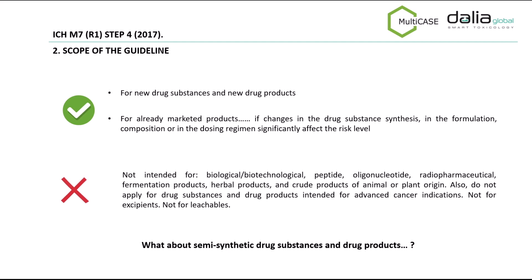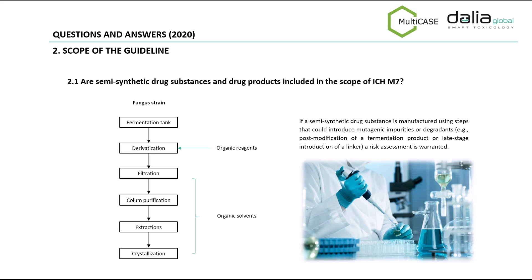In relation to the scope of the guideline, M7 applies for new drug substances and new drug products during their clinical development and subsequent applications for marketing. For already marketed products, if any change could affect the risk level, then an ICH M7 assessment should be performed. This guideline does not apply for some products such as biological products, peptides, radiopharmaceuticals or fermentation products, among others. For semi-synthetic drug substances, a risk assessment is needed in case that manufacturing steps could introduce mutagenic impurities. Post-modification steps in semi-synthetic antibiotics could represent a source of mutagenic impurities.